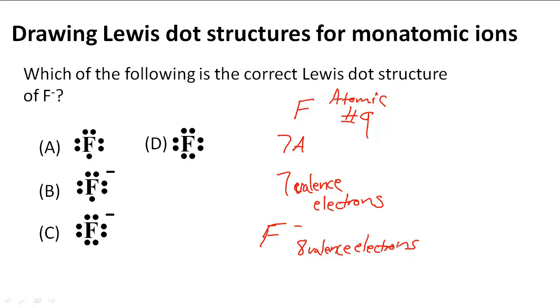So we have 8 valence electrons making it more stable. So A shows us the Lewis dot structure of 1, 2, 3, 4, 5, 6, 7. There are 7 valence electrons. That's great. But we're not looking for just F. We're looking for F negative. So A is wrong for this problem because we know that F has gained a valence electron.